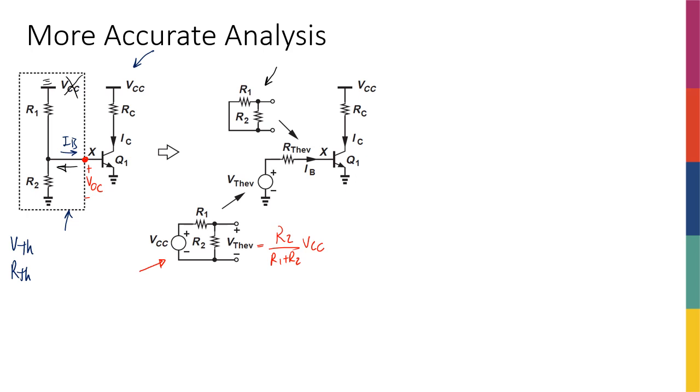So I'm going to have R1 in parallel with R2. And then this would be the Thevenin-equivalent circuit, or the Thevenin-equivalent of the circuit inside that dashed box.